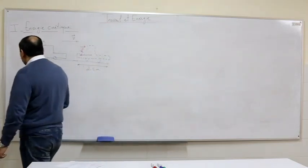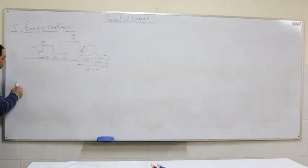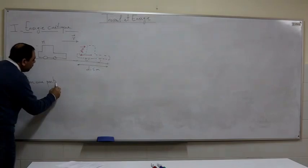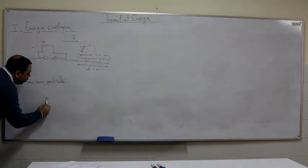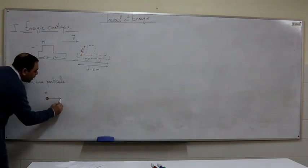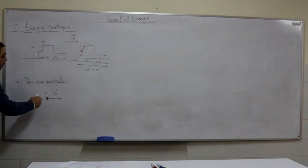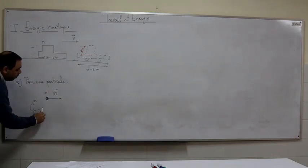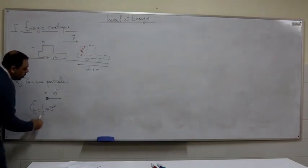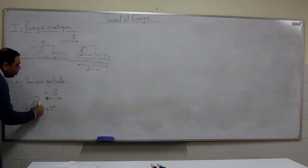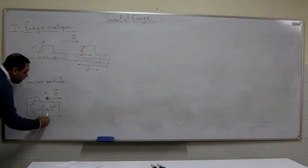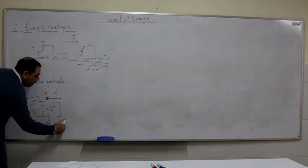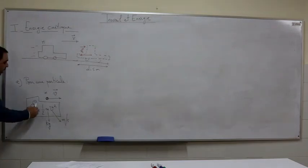Now for the expression of the kinetic energy for a particle: this is a particle of mass m moving with velocity v. The particle acquires a kinetic energy KE equals one half m v squared. This is the expression for a particle of mass m in kilograms having speed v in meters per second. The unit of kinetic energy is the joule.